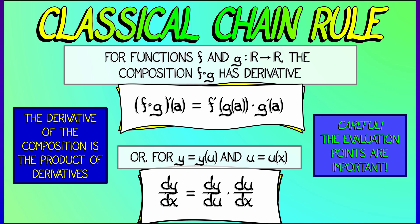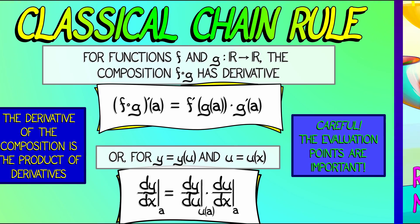Now again, be careful with those evaluation points. If you want this evaluated at a, then you evaluate du dx at a, but you evaluate dy du at u of a.